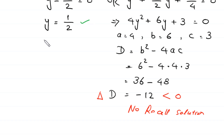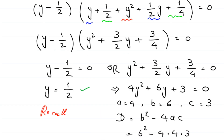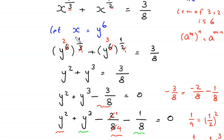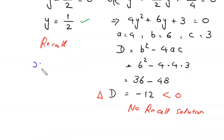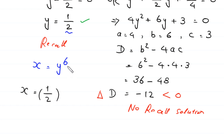To find the value of x, recall that we supposed x equals y to the power 6. We have the value of y equals 1 over 2. Substituting, x equals 1 over 2, whole to the power 6, which equals 1 to the power 6 over 2 to the power 6, giving x equals 1 over 64. This is the final answer.